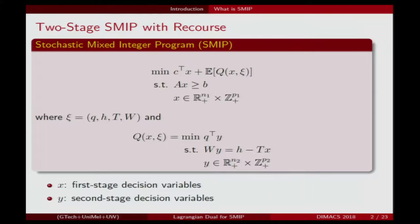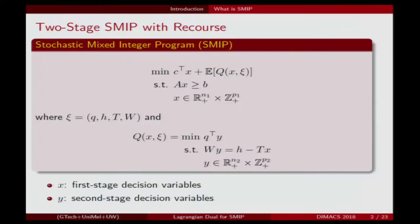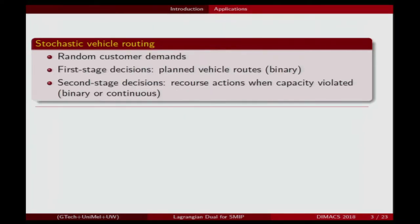After observing the random outcome — the random variable C — we solve a recourse problem which furthermore has the integer variables y, and some of those may also be integer variables. So this may be a two-stage stochastic program with integer variables in both stages. In general, it can be difficult to solve at global optimality.